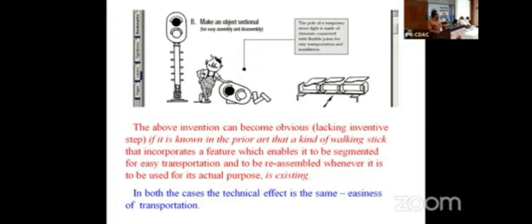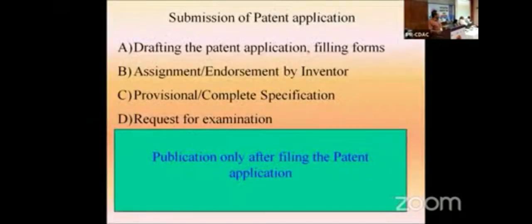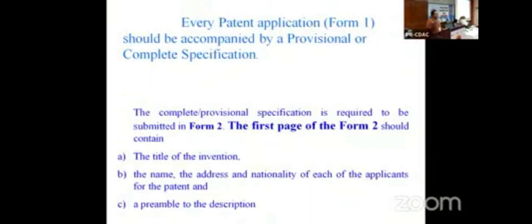Novelty of an invention must be examined — novelty means it has not been disclosed in prior art. If it is found in prior art, novelty is lost. There is also the inventive step parameter. If all your invention's components are disclosed together in a single document, novelty is lost. If they are disclosed across different documents, inventive step is lost. For example, a disassemblable lamp post for ease of transportation — if a document exists about a disassemblable walking stick for blind men for the same purpose, that could destroy the inventive step.